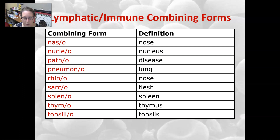Pneumono refers to lung, rhino to nose, sarco to flesh, spleno to the spleen, thymo to thymus, and tonsillo to tonsils.